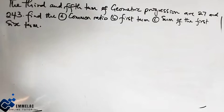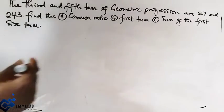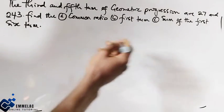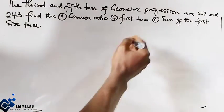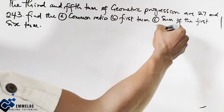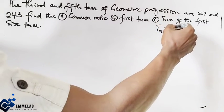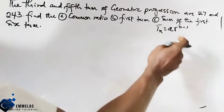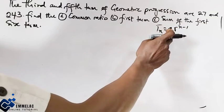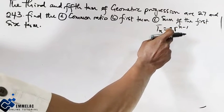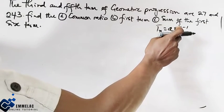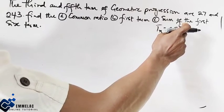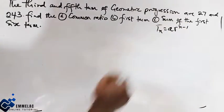Looking at this, we know that the formula for geometric progression is given as T_n equals A times R raised to the power n minus 1, where A is the first term, R is the common ratio, and n is the number of terms.